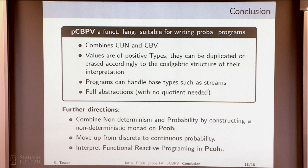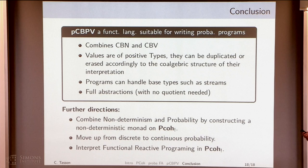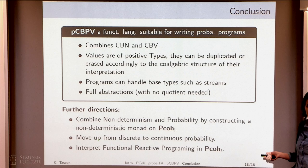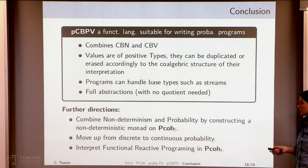A quick comment: this full abstraction result doesn't need to make a quotient, unlike the full abstraction for game semantics. We do not touch the morphisms to get the full abstraction result. The next steps are to move from discrete probabilities to continuous ones, and also to try to combine non-determinism with probabilities. We think we can define non-deterministic monads on the linear category and extend to the non-linear one.